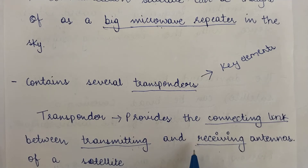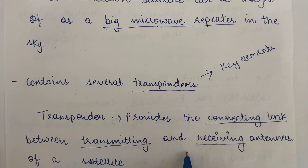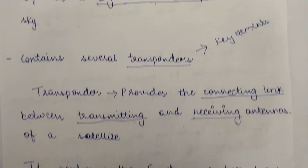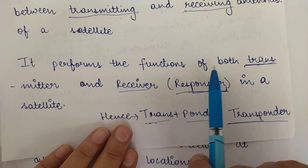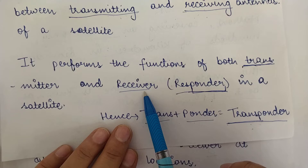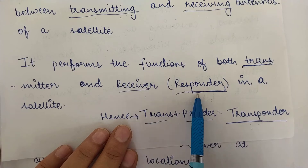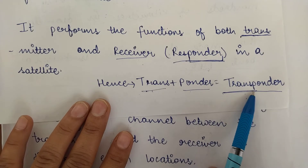The sole purpose of communication satellites is to communicate or exchange signals, and it is with the help of transponders that they can transmit and receive signals via their antennas. So transponders are the connecting links between the transmitting and receiving antennas. A transponder performs the functions of both transmitter and receiver — it can both transmit and receive data. A receiver is also known as a responder, so transmitter plus responder gives you a transponder.